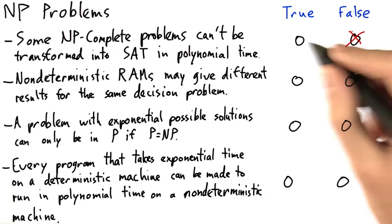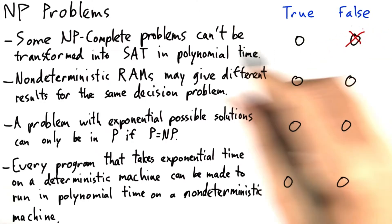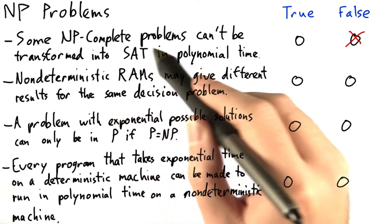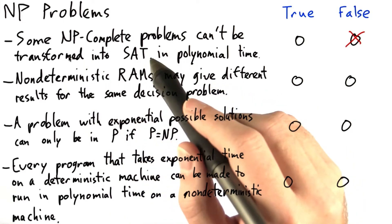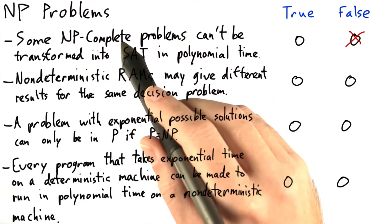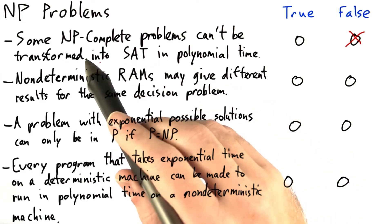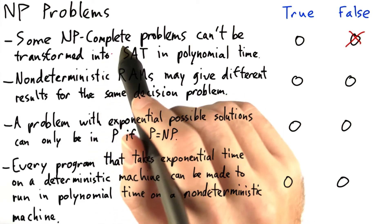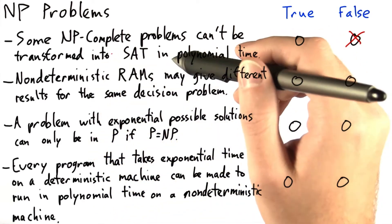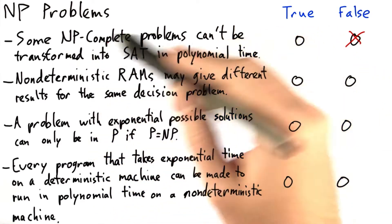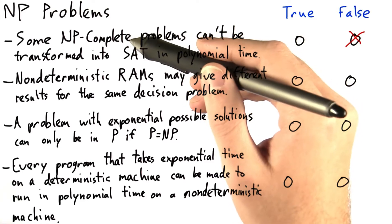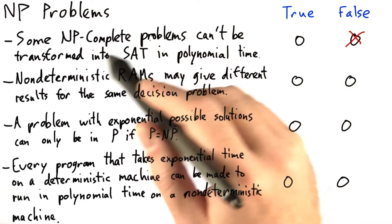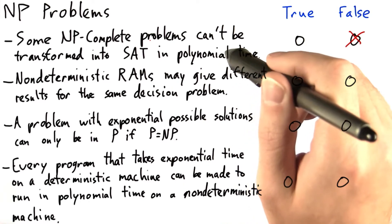The first problem is false, and this comes from the definition of NP-completeness. By definition, since SAT is NP-complete, every problem in NP can be reduced to it in polynomial time. So there can't exist NP-complete problems that can't be transformed into SAT in polynomial time.